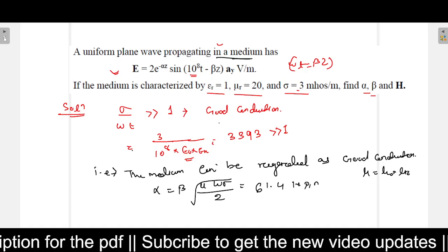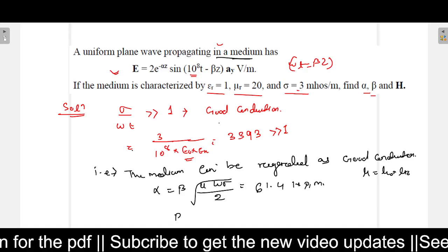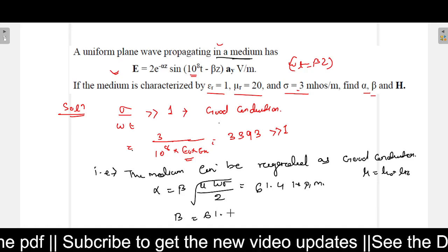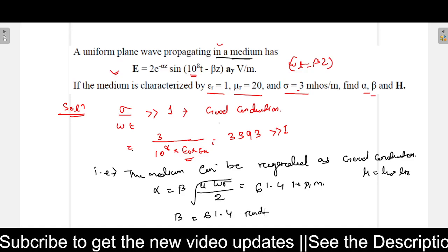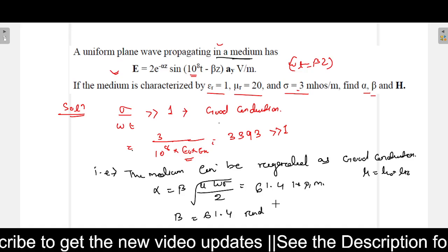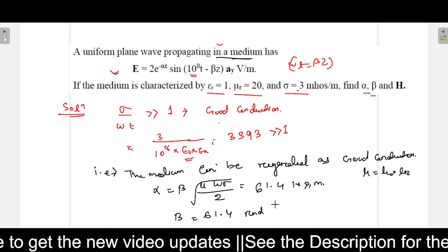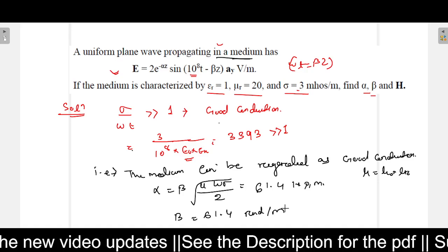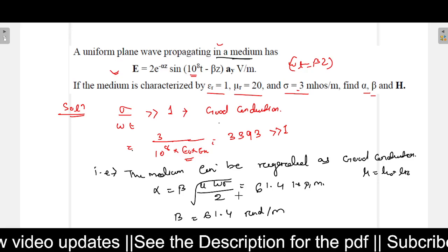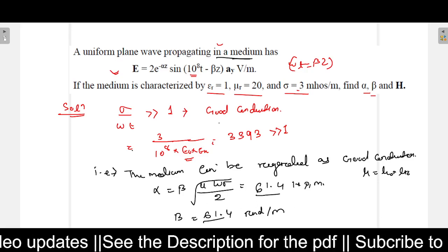So here the value will come as 61.4 neper per meter. This is important, the unit. And beta is 61.4 radian per meter. See, both will be same: alpha is 61.4 and beta is also 61.4.